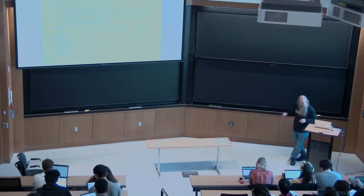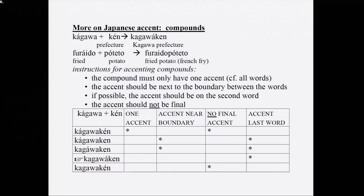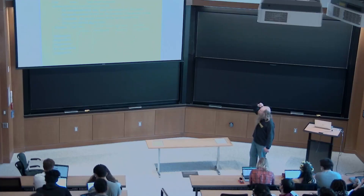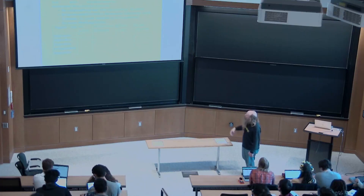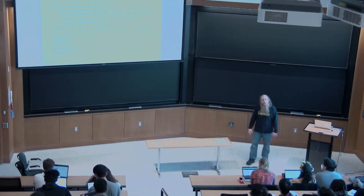It's a four-syllable word, so we consider putting the single accent on any of the four syllables. The first two violate the second law — put accent near the boundary. The next-to-last one wins because it obeys all conditions except the least important one. Notice there is no perfect candidate — nothing with no stars at all. The tableau lets us think formally about satisfying incompatible conditions.